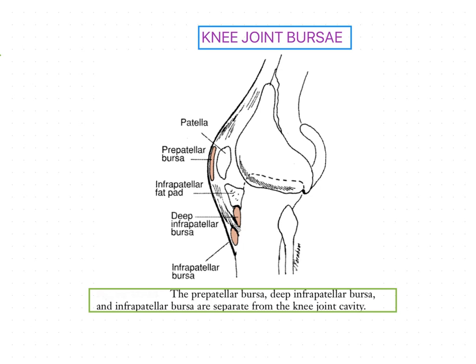Dear students, welcome back. In the previous session we discussed about the cruciate ligaments of the knee joint. Now in this session we are going to discuss about the knee joint per se. The extensive ligament apparatus of the knee joint and the large excursion of the bony segments set up substantial frictional forces between the muscles and ligaments and also with that of the bony structures. However, numerous bursae around the knee joint are present to prevent such frictional forces and help to limit such degenerative forces.